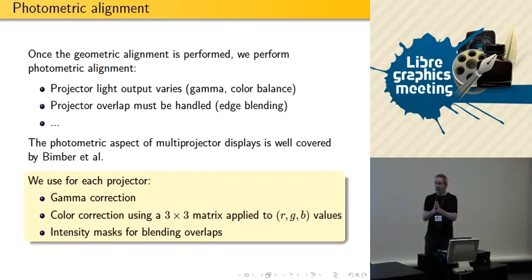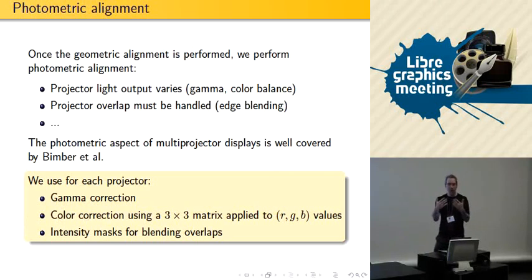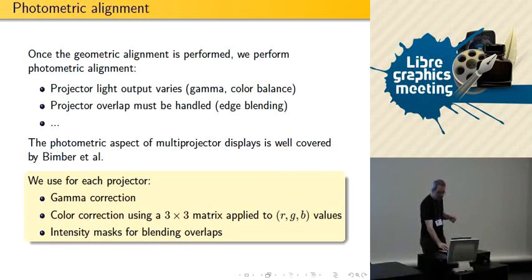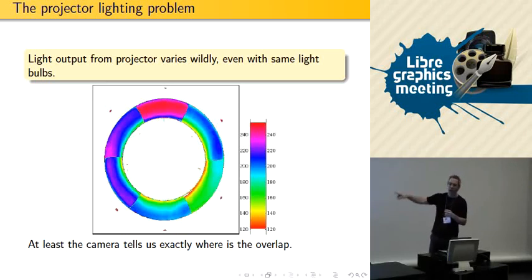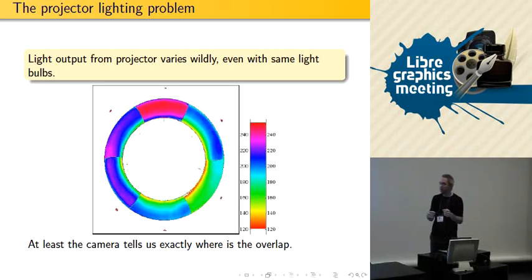Up until now it was all about geometric alignment — how to align the pixels. But there's another kind of alignment, which is photometric, because projectors don't have the same intensity. This includes gamma corrections and color adjustments. We took a picture with all projectors on and you can see the difference between all of them — really amazing. Our eyes compensate a lot, so it looks worse for the camera than for us.